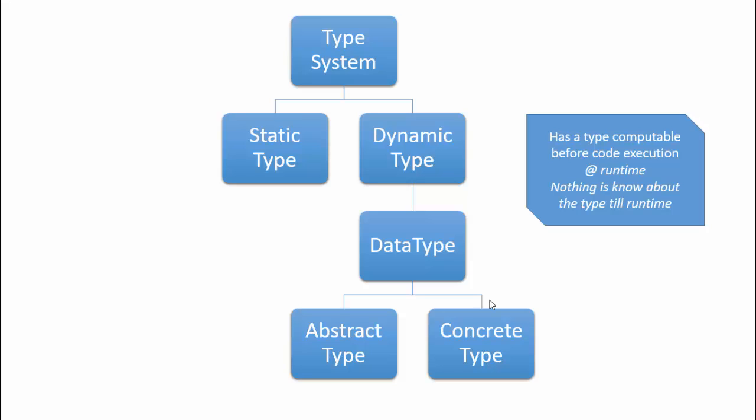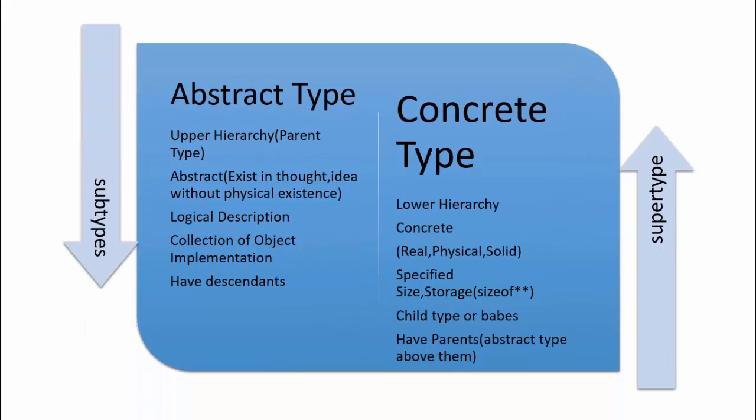Every value in Julia is a true object, and since every value is a true object, every value has a data type. It can be either an abstract type or a concrete type. When you say abstract type, abstract from the name means it only exists in thoughts — it's an idea without physical existence. It's just a logical description of something. For example, 'number' is just an idea; it can be an integer, a float, anything — but it's not specific and not bounded to a specified size.